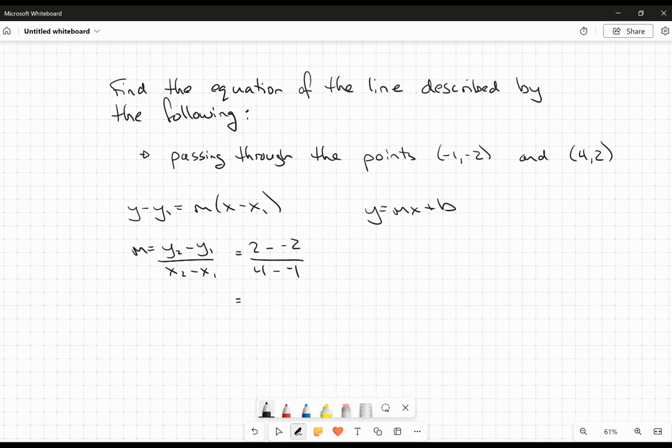So 2 minus negative 2 is going to be 4. 4 minus negative 1 will be 5. So we're looking for a line that has a slope of 4 fifths, and that passes through these two points here.